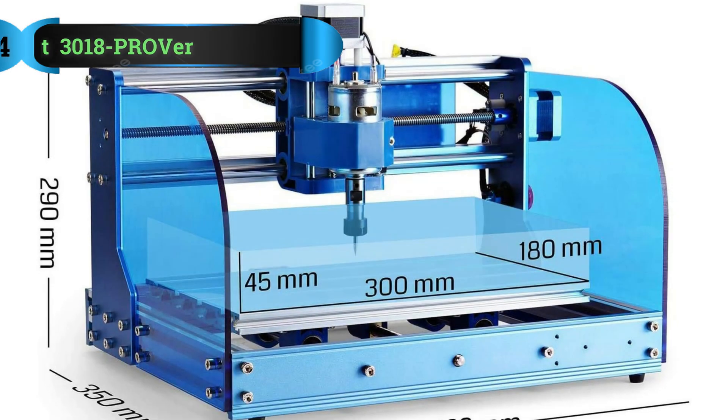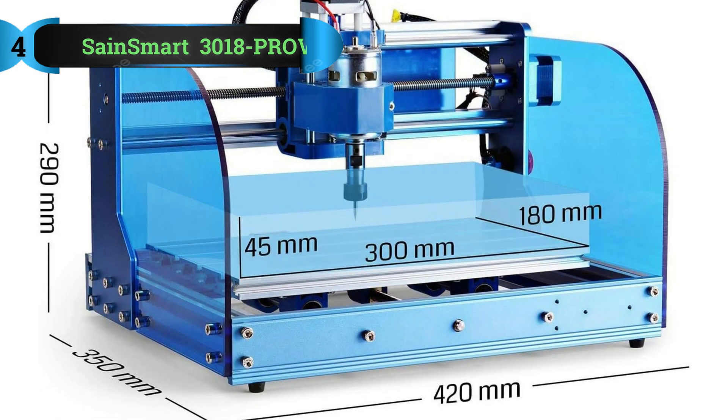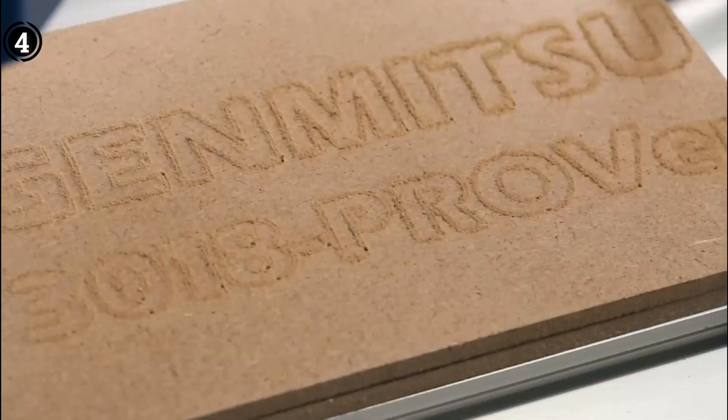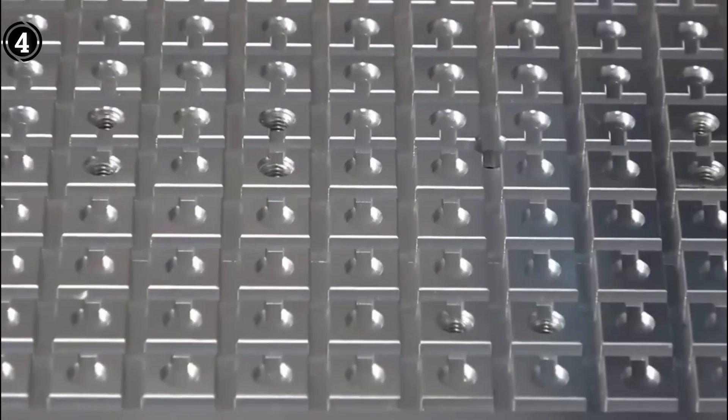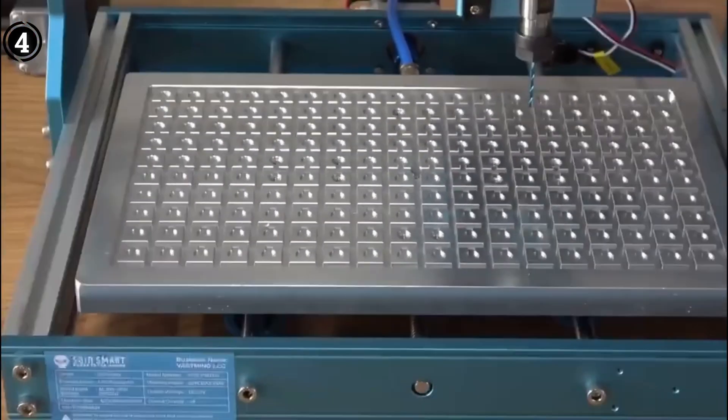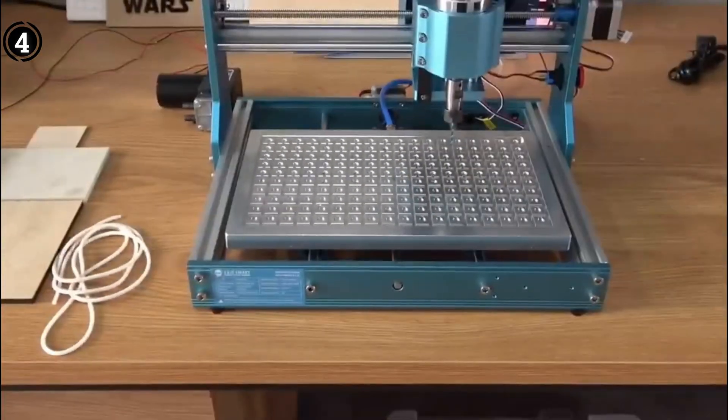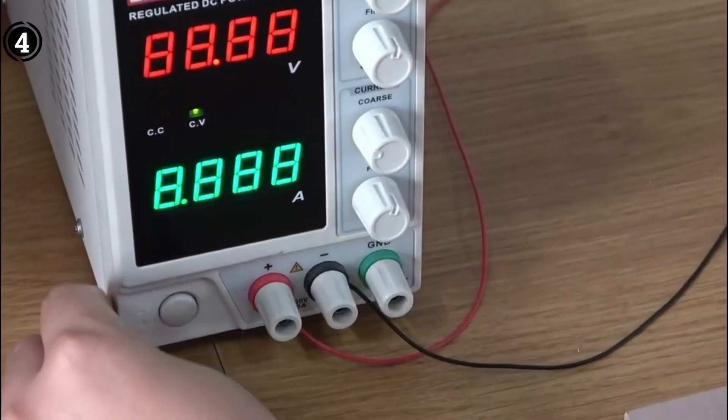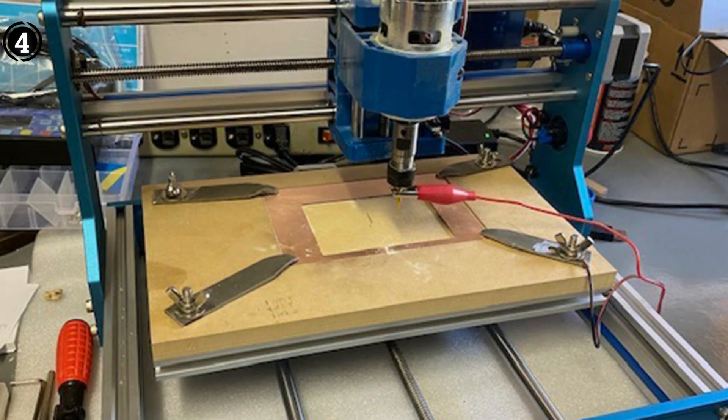List number 4: SaneSmart GenMitsu 3018 Prover CNC Router Machine. As a complete novice in the world of CNC routing, I was eager to get started but worried about the complexity. The SaneSmart GenMitsu 3018 Prover has been an absolute game-changer for me as a beginner.